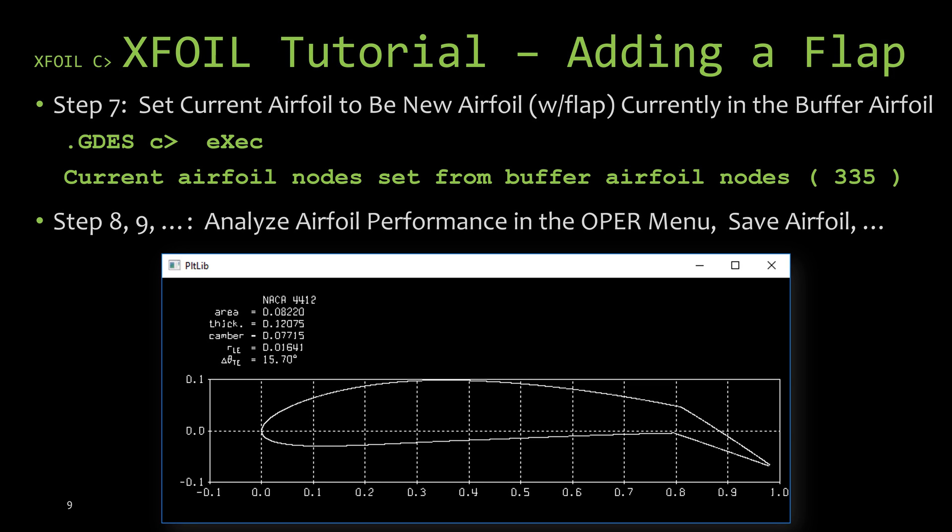As you can see by the window that I pasted here at the bottom of the slide, we have successfully modified our airfoil to include a trailing edge flap. Now the last step or steps is to use the airfoil however you originally wanted to use it, whether you're wanting to run an analysis or save it to a file or export it to CAD, really whatever you wanted to do with it, you're now able to because we have successfully added in the flap.